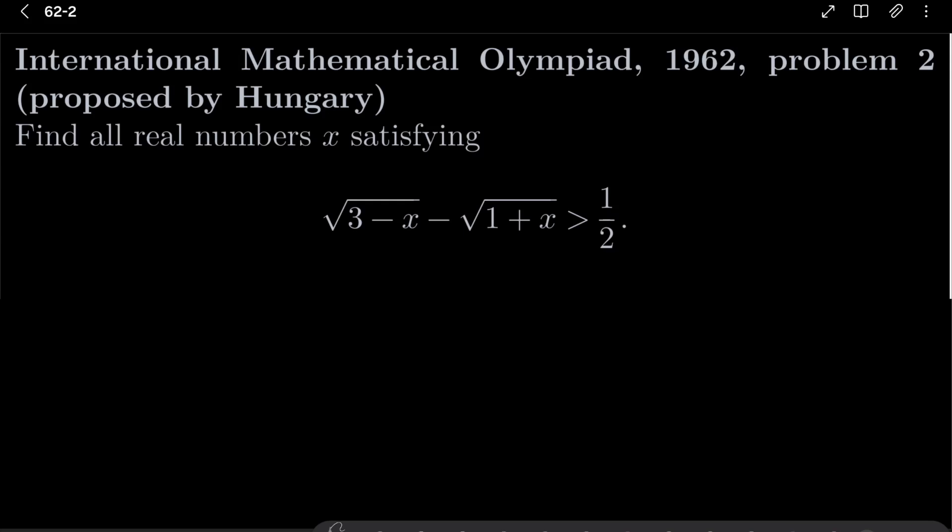We wish to find all real numbers x satisfying the following inequality: square root of 3 minus x minus square root of 1 plus x greater than 1 half.